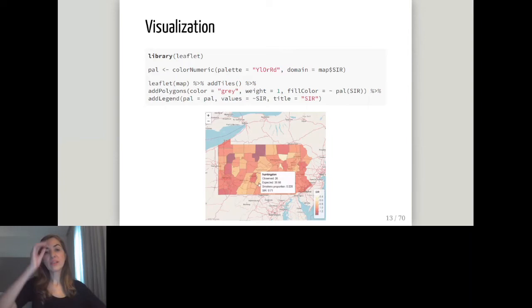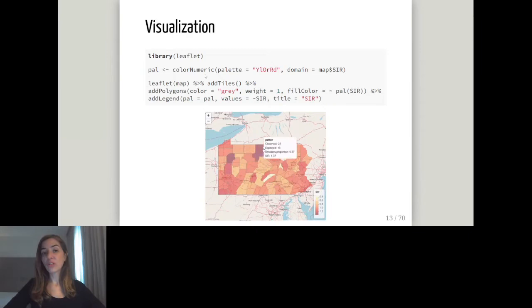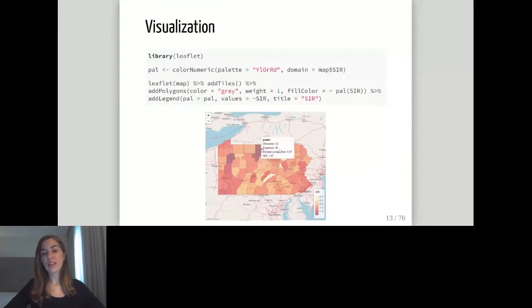R has many excellent packages for static and interactive visualization. Here I use leaflet for interactive mapping, where we can zoom in, zoom out, and hover the mouse over regions to explore values. To create this map, we first define a color palette — here I used yellow-orange-red — then call leaflet passing the map, add tiles to put a background map to provide context, add polygons, a legend, and labels with information corresponding to each area.